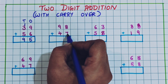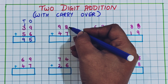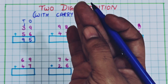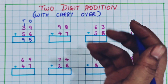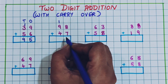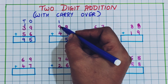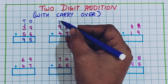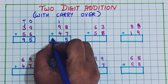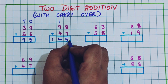Next: 98 plus 47. Now 8 plus 7 — I will keep 8 in my mind and add 7: 9, 10, 11, 12, 13, 14, 15. So again 15. I will write 1 as a carryover and 5 here. Now 9 plus 1 is 10, and 10 plus 4 is 14. So the answer is 145.